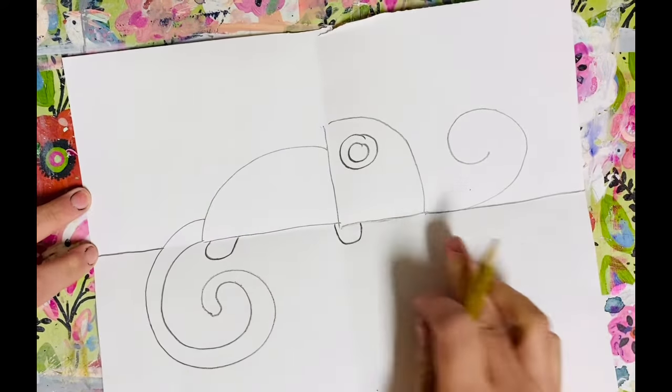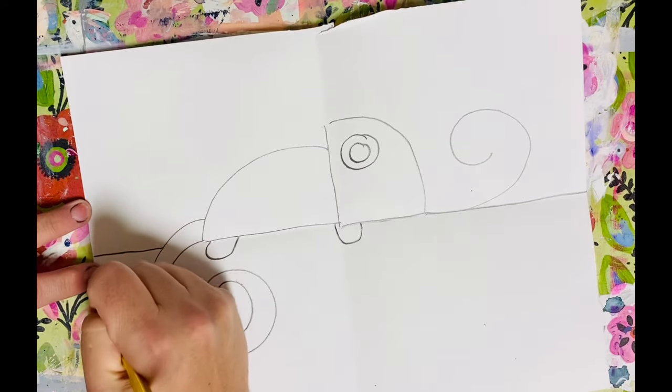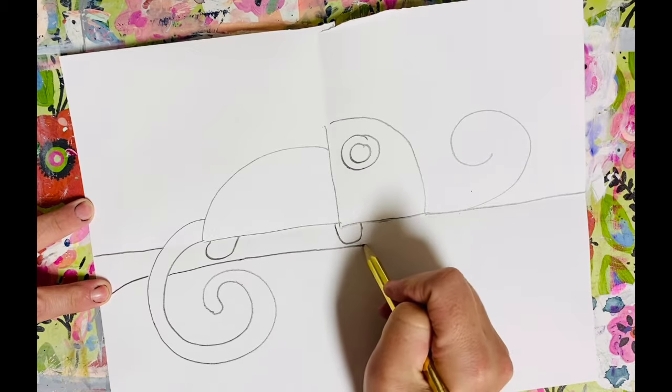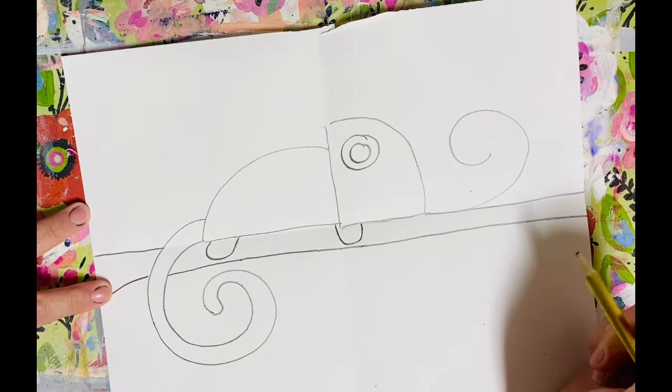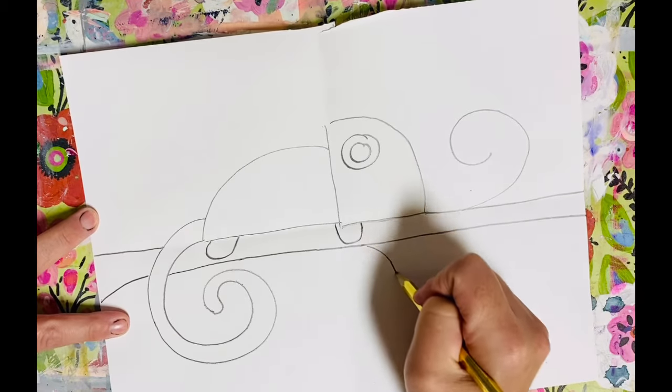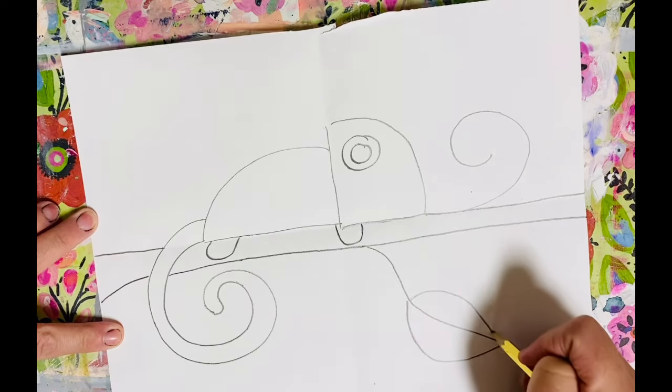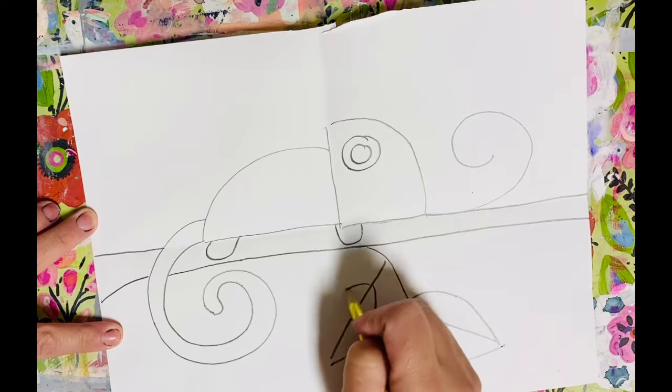So I'm going to draw a straight line on that fold and I'm going to turn that into a branch by just drawing another line beneath it. I think this branch could use some leaves just to make it a little extra festive. You know what I'm saying? We need some leaves here.